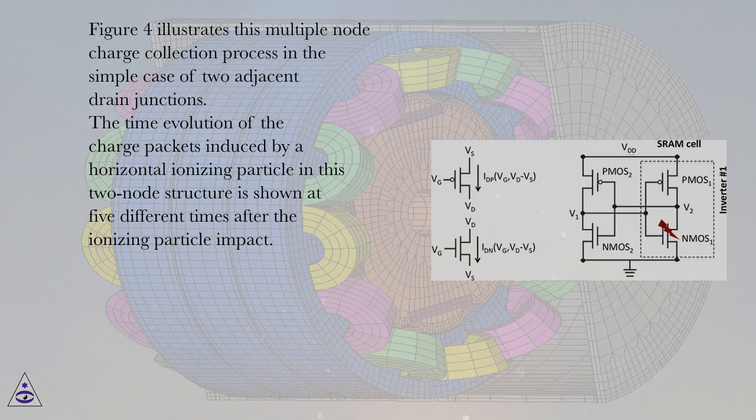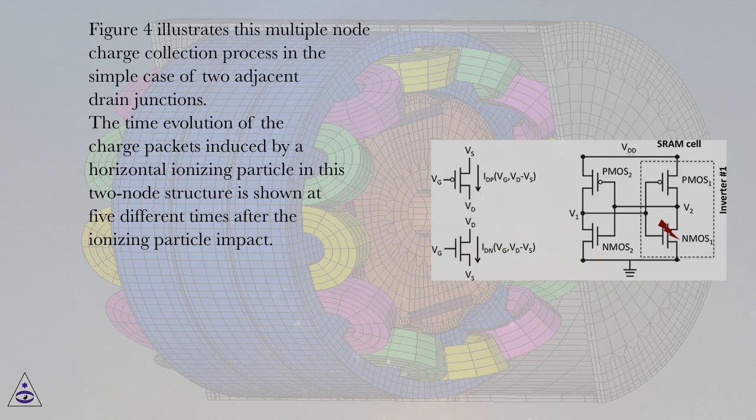Figure 4 illustrates this multiple node charge collection process in the simple case of two adjacent drain junctions. The time evolution of the charge packets induced by a horizontal ionizing particle in this two-node structure is shown at five different times after the ionizing particle impact.